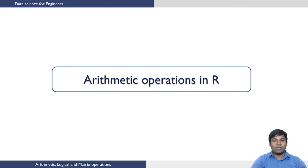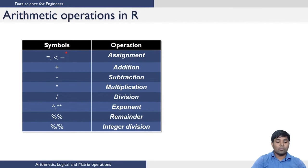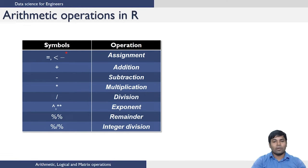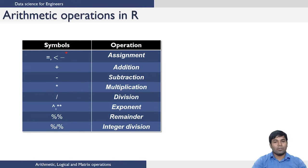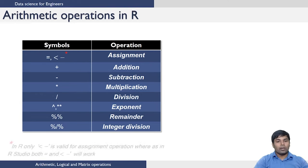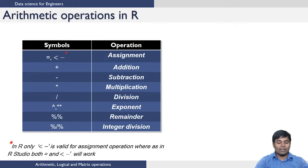Let us first look at the arithmetic operations. R supports all the basic arithmetic operations. The first one is the assignment operator. You can use either equals to or the back arrow to assign a value to a variable, and standard addition, subtraction, multiplication, division, integer division and remainder operations are also available in R. In R, the back arrow is the only valid assignment operator, whereas in R Studio both equals to and back arrow are proper assignment operators.